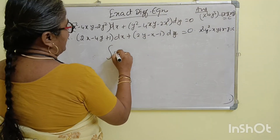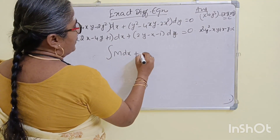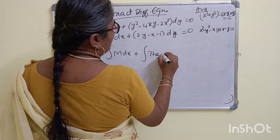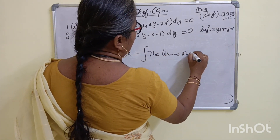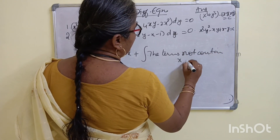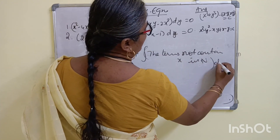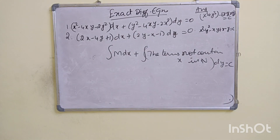We will solve it. The formula is: integral of M dx, plus the terms not containing x in N, times dy, equal to constant. The terms not containing x in N.